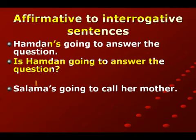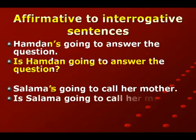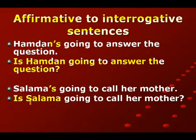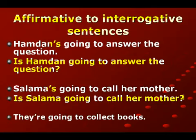جملة ثانية: Salama's going to call her mother - يعني السلامة بتتصل بأمها. عندنا contraction: سلامة وis جمعناهم مع بعض فأصبح Salama's. الحين نتغير هاي الجملة الثابتة إلى الجملة السوالية فتصير: Is Salama going to call her mother? يعني هل سلامة بتتصل بأمها؟ is هاي شكل الـ be، ثم الفاعل سلامة، ثم going to، ثم call أول حالة الفعل، ثم her mother المفعول، وأخيراً علامة الاستفهام.